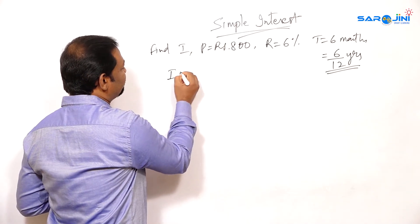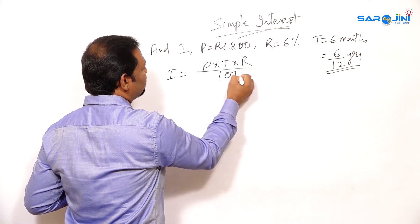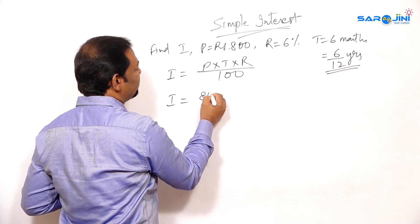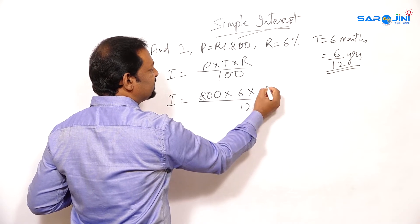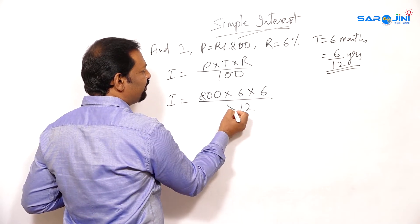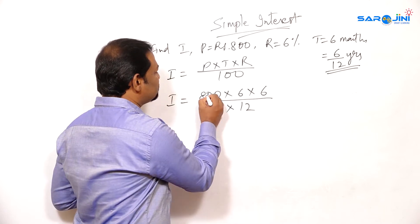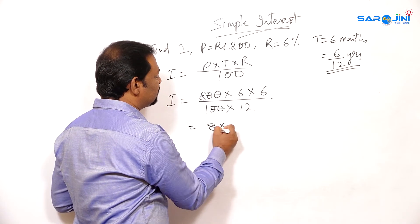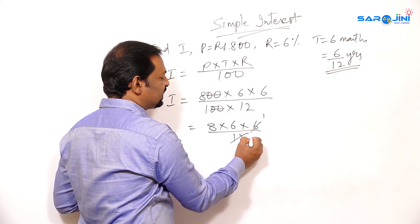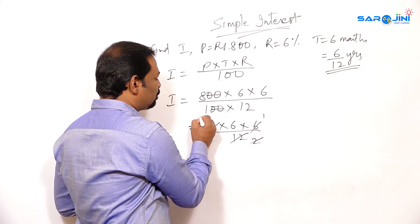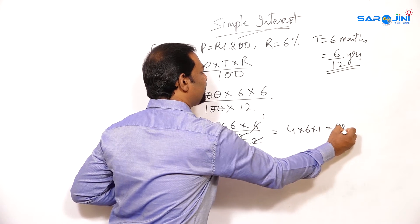The simple interest formula is P into T into R by 100. So interest is equal to P is 800 rupees, into time is 6 by 12, into R is 6%, divided by 100. Now what you are going to do? Here 2 zeros can cancel. What you have? 8 into 6 into 6 divided by 2. So 6 twos are 12 — cancel. 2 fours remain. So 4 into 6 into 1 is equal to rupees 24.